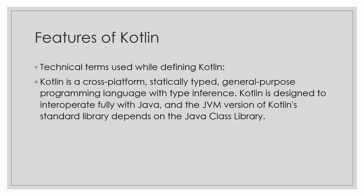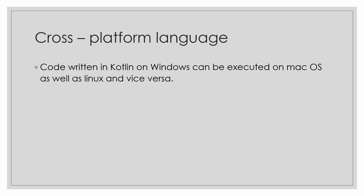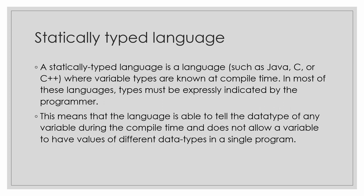What is a cross-platform language? A cross-platform language can be used on any operating system — code written in Kotlin on Windows can be executed on macOS, Linux, or any other operating system, and vice versa. What is a statically typed language? A statically typed language is one where variable types are known at compile time, such as Java, C, or C++. In most of these languages, the type must be explicitly indicated by the programmer.